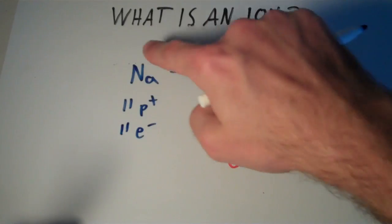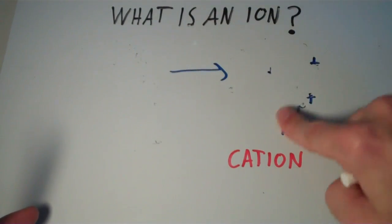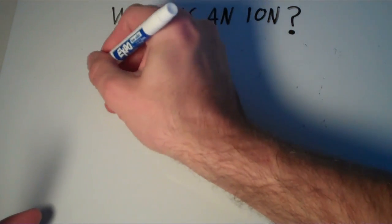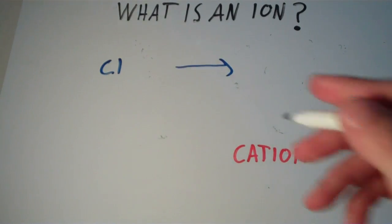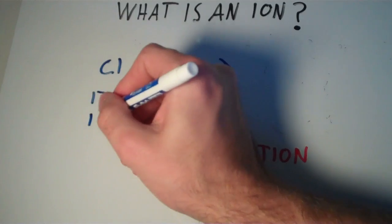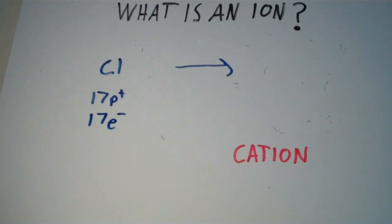Alright, so now suppose we have a chlorine atom. The chlorine atom has 17 protons and 17 electrons. It's charged neutral just like the sodium atom was.